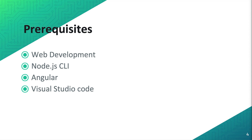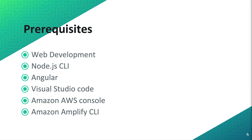To follow this tutorial, you need to have a valid AWS user and access to the AWS console. We will be using the AWS Amplify utility CLI to connect our front-end to the AWS back-end and provision the required resources. So let's get started.